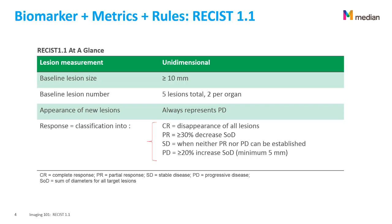These criteria are used to classify patients into various categories of response: complete response (CR), if there is total disappearance of all lesions; partial response (PR), if there is only a partial decrease; stable disease (SD); or progressive disease (PD), if the tumors grew. The response criteria classify patients into CR, PR, SD, or PD, and this is how results are reported in the trial.